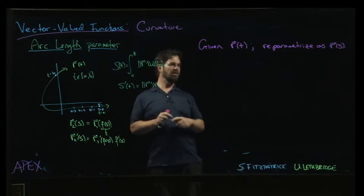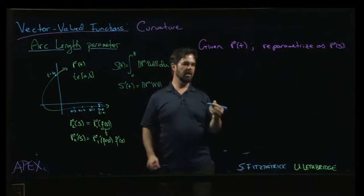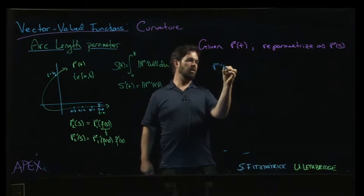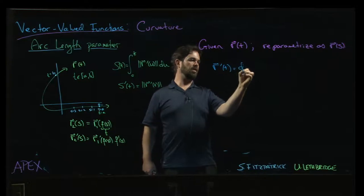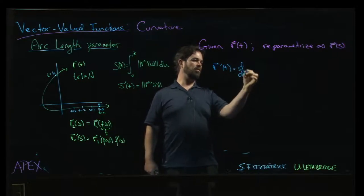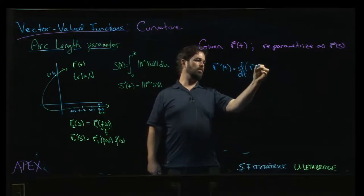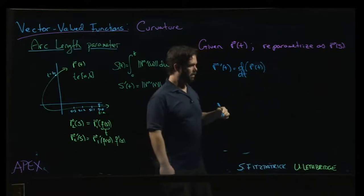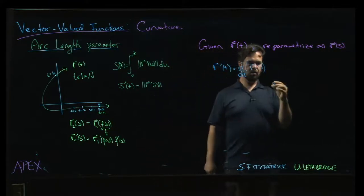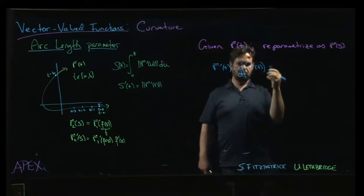All right. So the next thing we want to do is just notice that if I go ahead and I calculate R prime of t—that's derivative with respect to t of R of t—and you know we kind of do the usual chain rule.